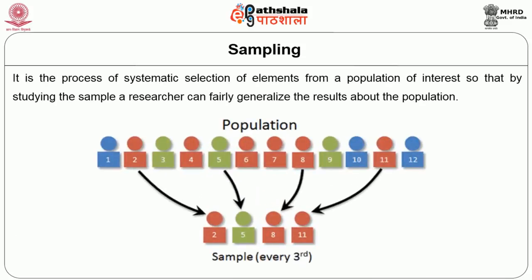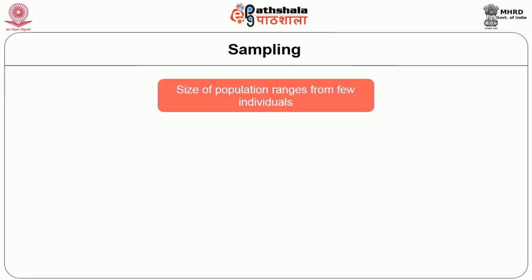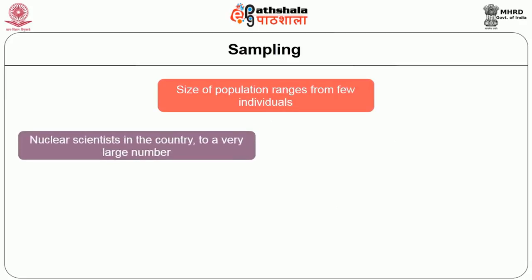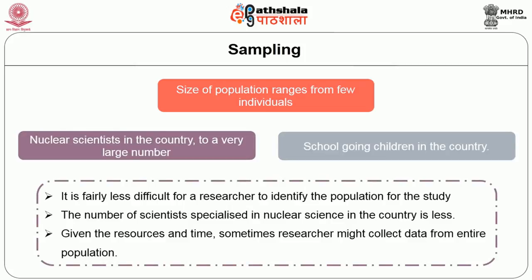Sampling is the process of systematic selection of elements from a population of interest so that by studying the sample, a researcher can fairly generalize the results about the population. The size of a population ranges from few individuals — for example, nuclear scientists in the country — to a very large number, for example, school-going children in the country. Given the resources and time, sometimes a researcher might collect data from the entire population.